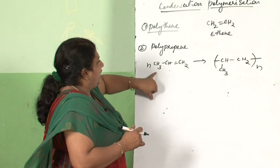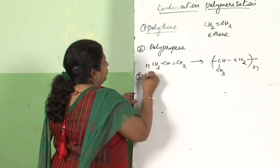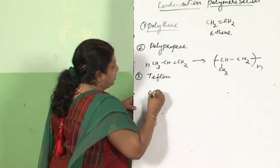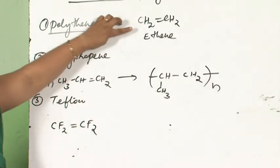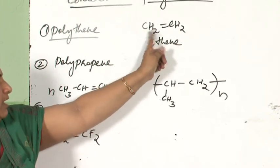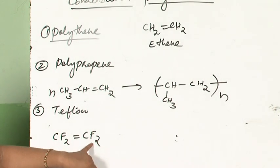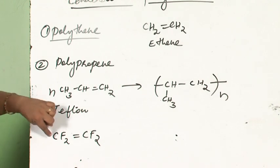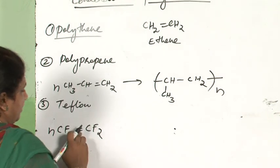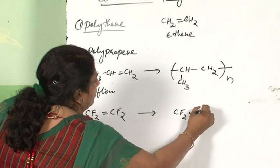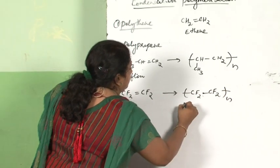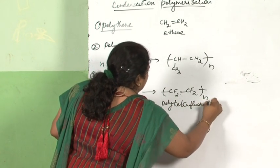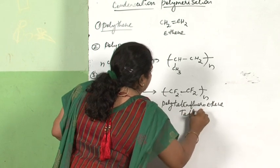The third polymer is Teflon. Its monomer is tetrafluoroethene. This is like an ethene molecule where all four hydrogens on both carbon atoms are replaced by fluorine, giving CF2=CF2. This undergoes simple addition polymerization — the double bond breaks to give -[CF2-CF2]n-. This is poly(tetrafluoroethene) or Teflon, the familiar non-stick coating on vessels.